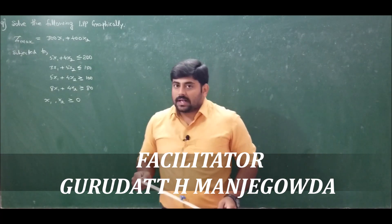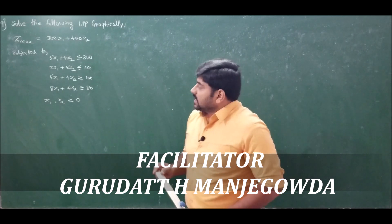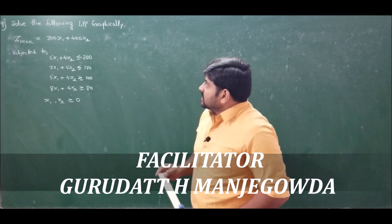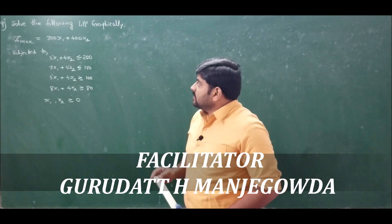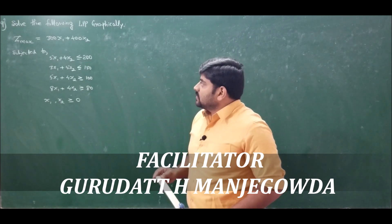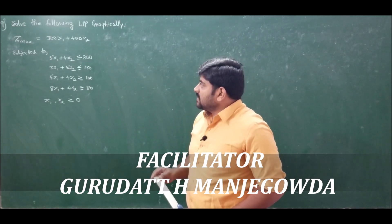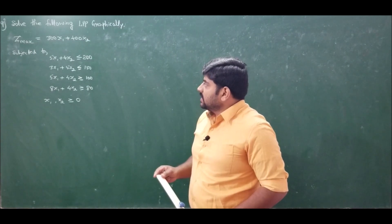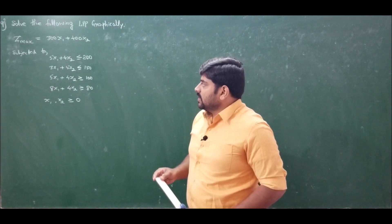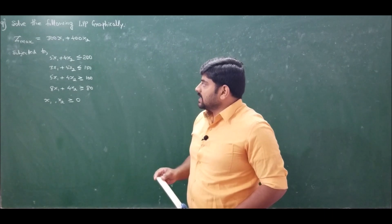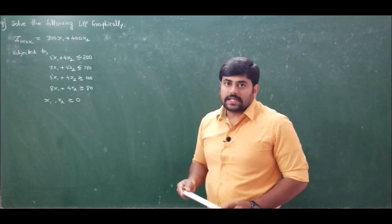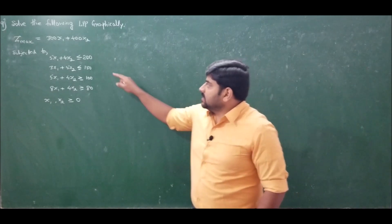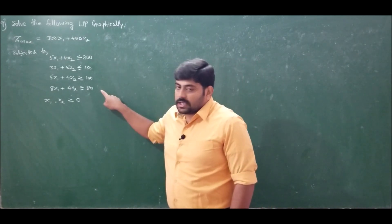Problem number 9 states: solve the following LPP graphically. Z max equals 300x1 plus 400x2, subjected to: 5x1 plus 4x2 ≤ 200; 3x1 plus 5x2 ≤ 150; 5x1 plus 4x2 ≥ 100; 8x1 plus 4x2 ≥ 80. So we have both less-than-or-equal-to and greater-than-or-equal-to constraints.